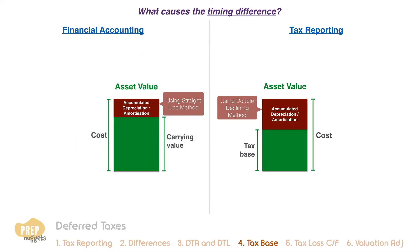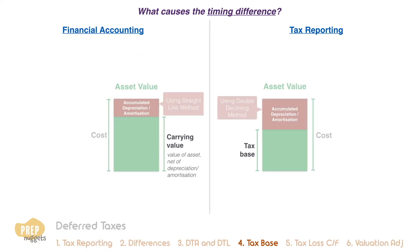While the carrying value is the value of the asset on the balance sheet net of depreciation and amortisation, the tax base of an asset is the amount deductible for tax purposes in future periods as the economic benefits of the asset are realised. The carrying value and the tax base can be the same, but they can also be different, as in this case. This is what causes the temporary differences in the accounting profit and the taxable income for the period.